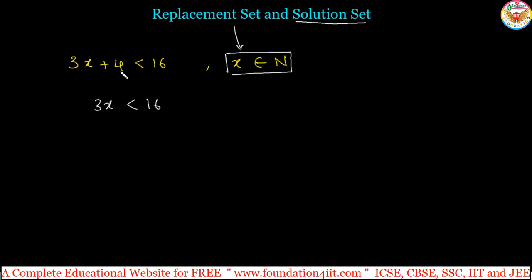So, 3x less than 16 minus 4 transpose. 3x less than 12. Divide with positive number. 3x divided by 3, 12 divided by 3. Dividing with the positive number does not change inequality. 3, 3 cancel, then x is less than 12 divided by 3 is 4.